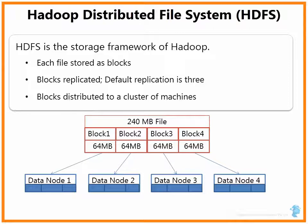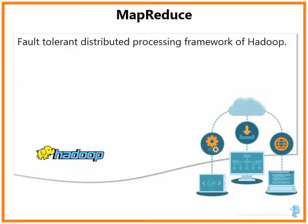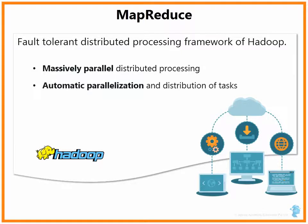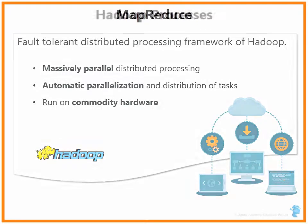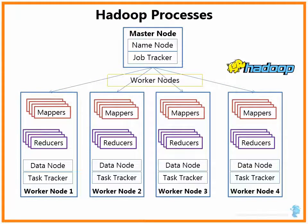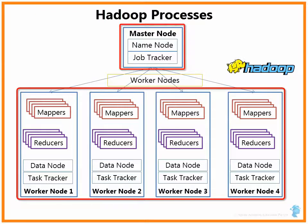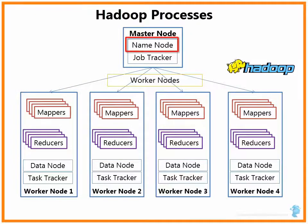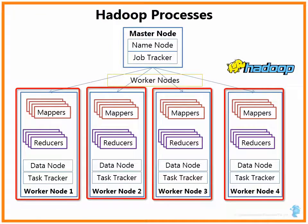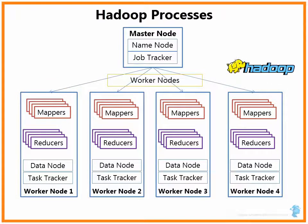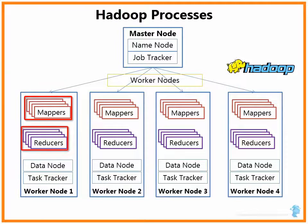Let us look at MapReduce. MapReduce is the fault-tolerant distributed processing framework of Hadoop. It provides massively parallel distributed processing, automatic parallelization and distribution of tasks, and runs on a cluster of commodity hardware. In the Hadoop process architecture, there is normally one master node and multiple worker nodes. The master node runs two processes: a name node process as part of HDFS and a job tracker process as part of MapReduce. Each worker node runs two processes: a data node process as part of HDFS and a task tracker process as part of MapReduce. Multiple mapper and reducer tasks run on each worker node, started by the task tracker process.